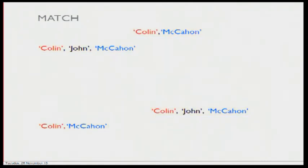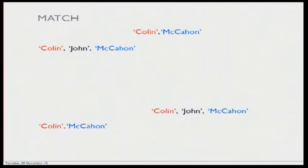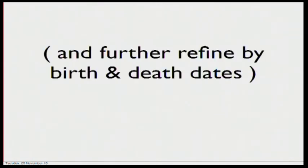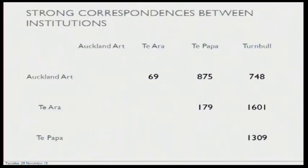I ended up with what I called my weak matches. I then found strong matches by comparing birth dates and death dates. A strong match is all that we're going to look at from here on. I think there's potential to work with the weak matches, particularly with crowdsourcing. Further refinement by birth and death date.